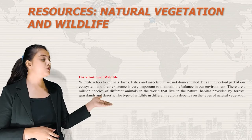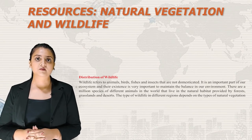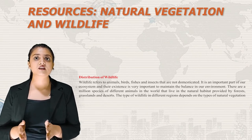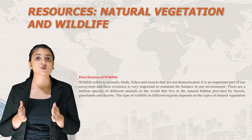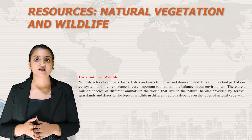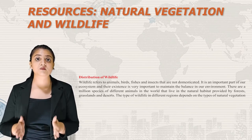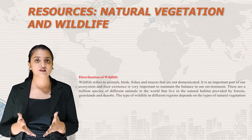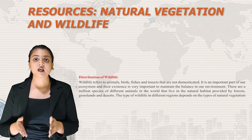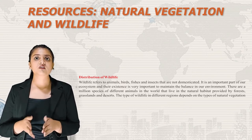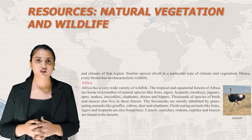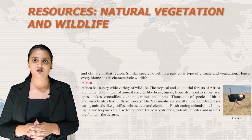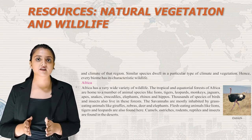Wildlife refers to animals, birds, fishes and insects that are not domesticated. It is an important part of our ecosystem and their existence is vital to maintain environmental balance. Millions of species of animals live in natural habitats provided by forests, grasslands and deserts. The type of wildlife in different regions depends on the types of natural vegetation and climate, and every biome has its characteristic wildlife.